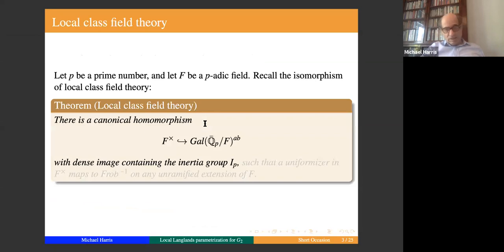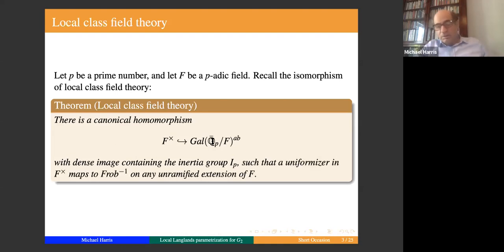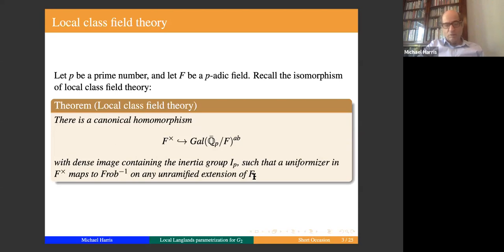The local Langlands correspondence is a generalization of local class field theory. There is a canonical homomorphism from the multiplicative group of the field to the abelianization of the Galois group. The homomorphism has dense image and contains the inertia group. We choose the normalization where the uniformizer in F* maps to the inverse of Frobenius acting on any unramified extension — there's a unique canonical homomorphism with this property.